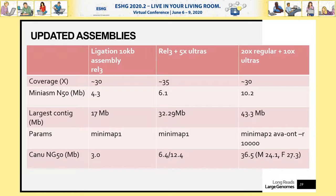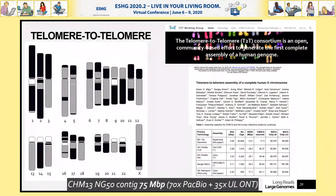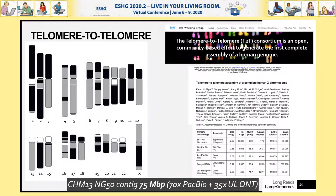Other groups have followed up on this. There was a preprint last year from Karen Miga and Adam Phillippy and the Telomere-to-Telomere Consortium, working with CHM13 — a haploid human cell line. They generated 70x PacBio data and 35x ultra-long ONT reads. The resulting assembly has an NG50 of 75 megabases and is the most contiguous human genome to date. They were able to finish the X chromosome — a complete X chromosome, with more to follow.